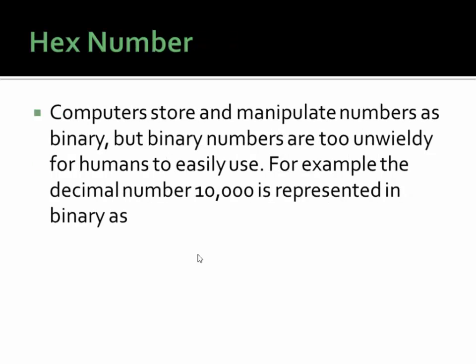Now, binary numbers are great, and computers use them to store and manipulate numbers. But for humans, binary numbers are just too unwieldy — they're too big and hard for us to deal with. For example, the number ten thousand that we're familiar with in decimal is represented in binary as a very long string, and as the number gets bigger, the number of binary digits gets longer and longer and becomes very unwieldy.